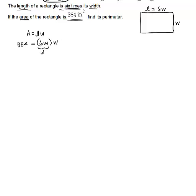So remember, this was my L, or 6W squared. So I have 384 equals 6 times W squared. Now I want to get W squared by itself. That's the variable I'm trying to solve for. And since I'm multiplying it by 6, I'm going to divide both sides by 6.